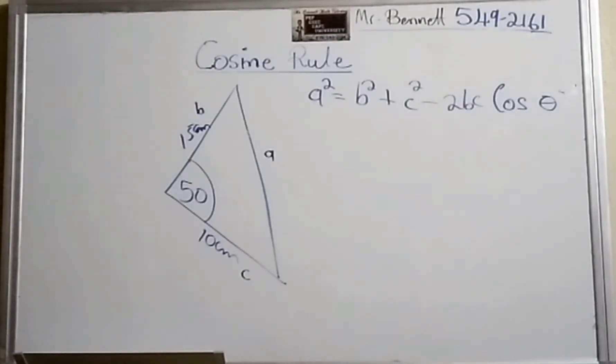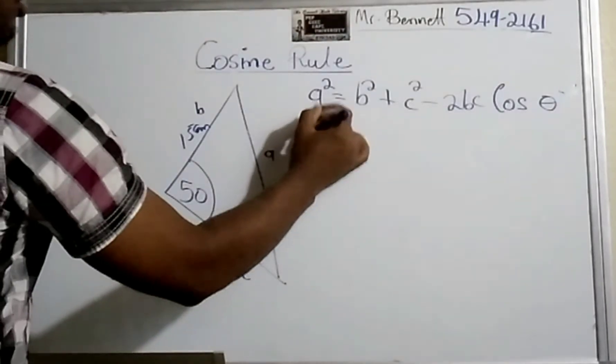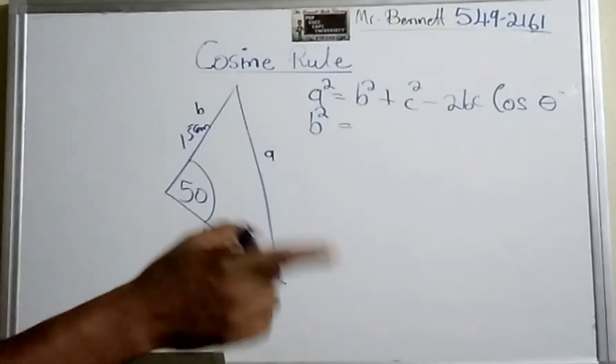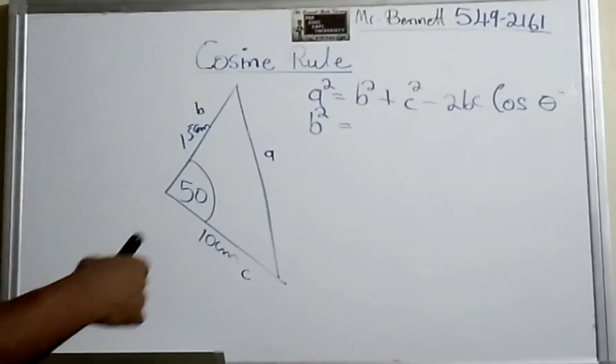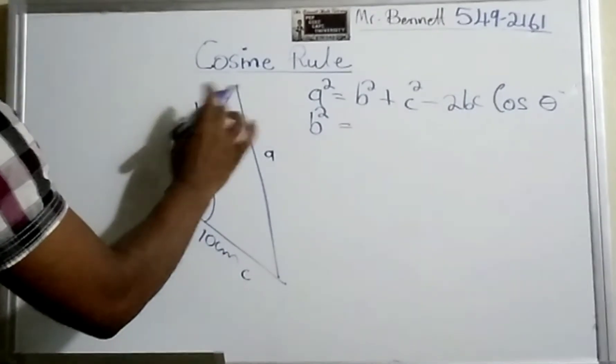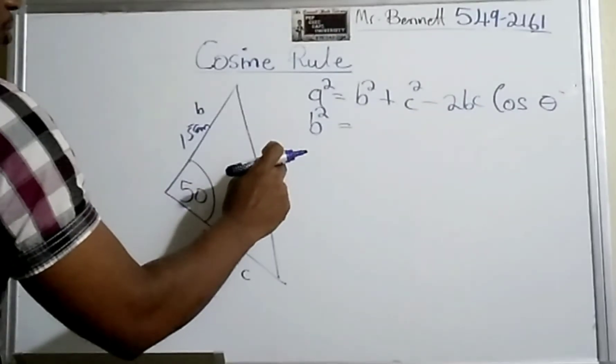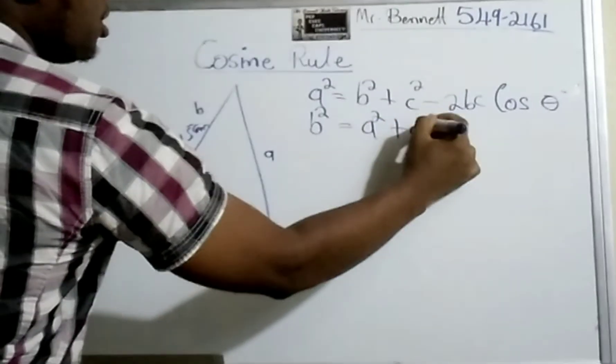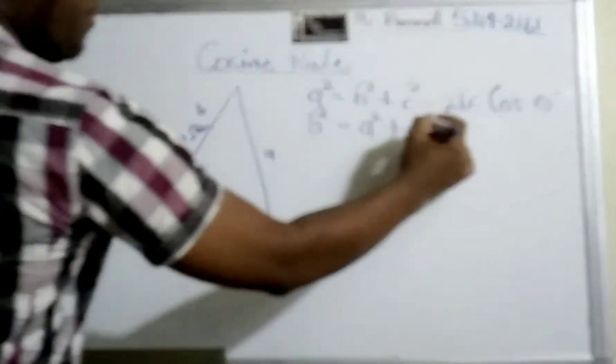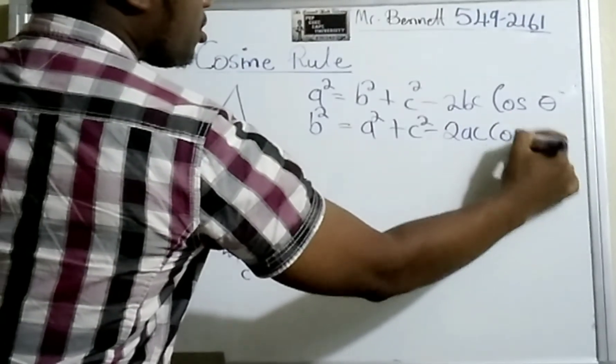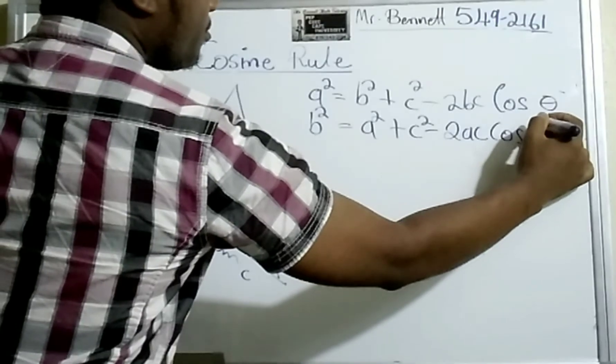Let us assume we were looking for B squared. I want you guys to see the pattern. For the third one, you guys are going to do it. So b² would equal a² + c² - 2ac cos B.